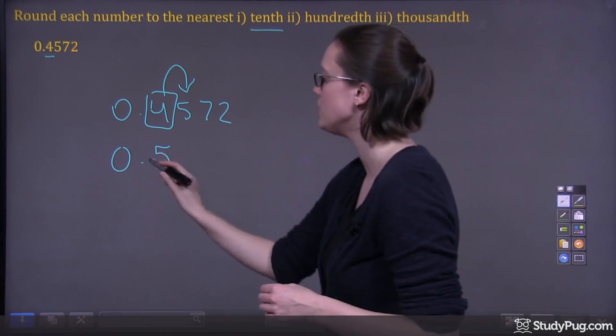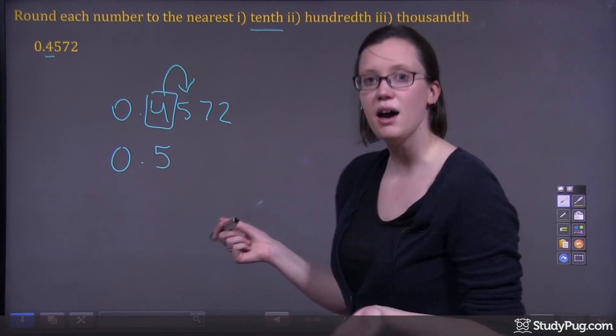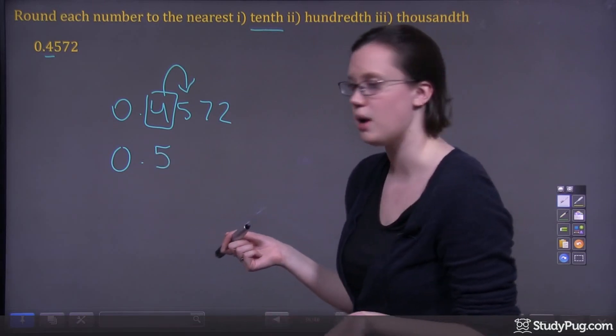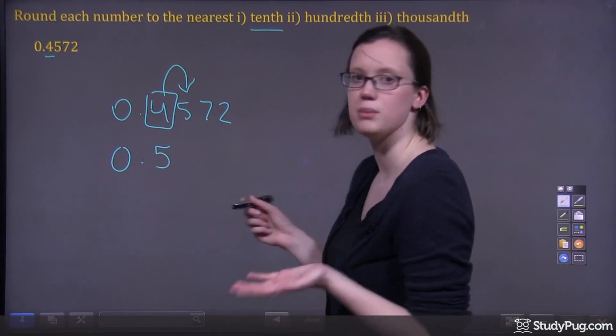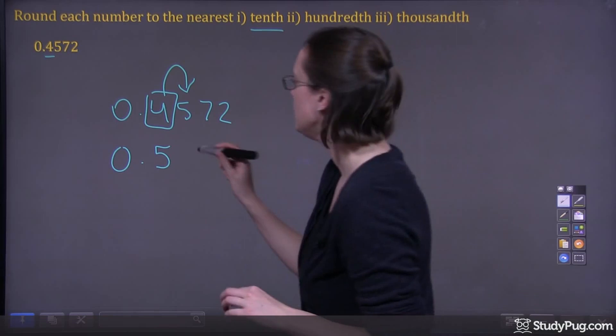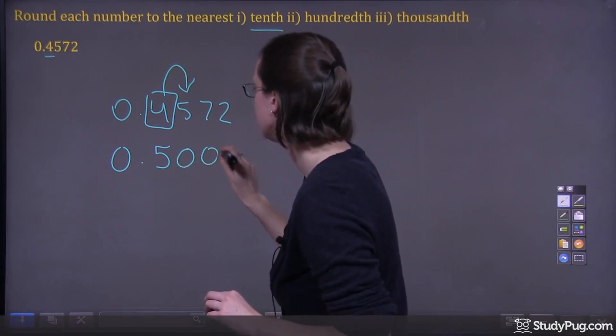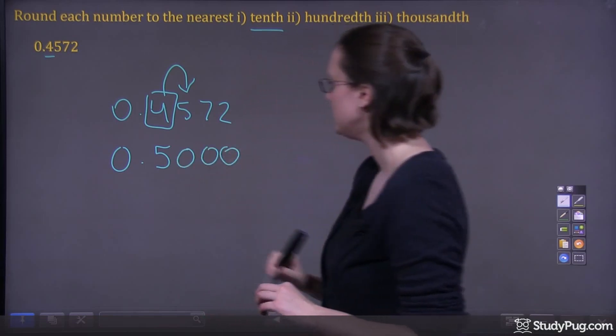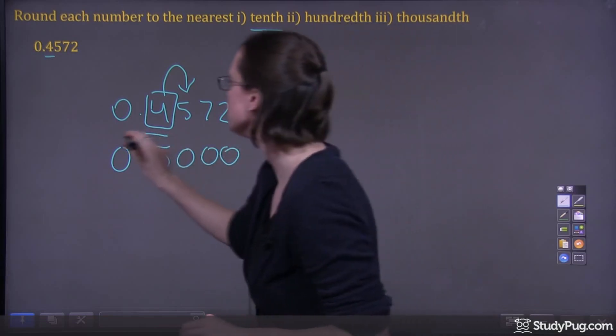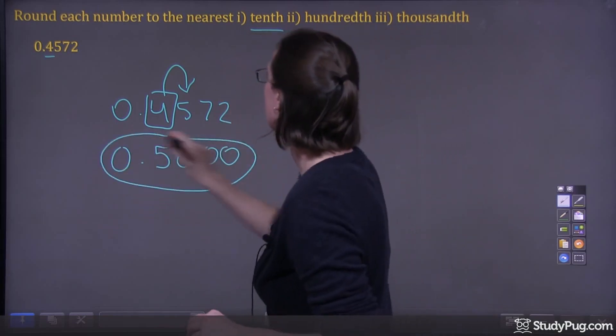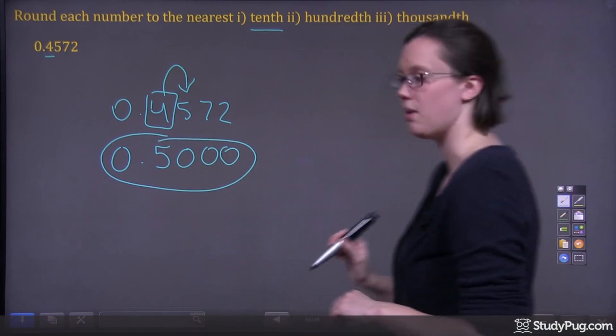So we have zero, decimal. Anything that comes after the digit you're rounding becomes zeros, so we're going to have three zeros. So this is our number rounded to the nearest tenth.